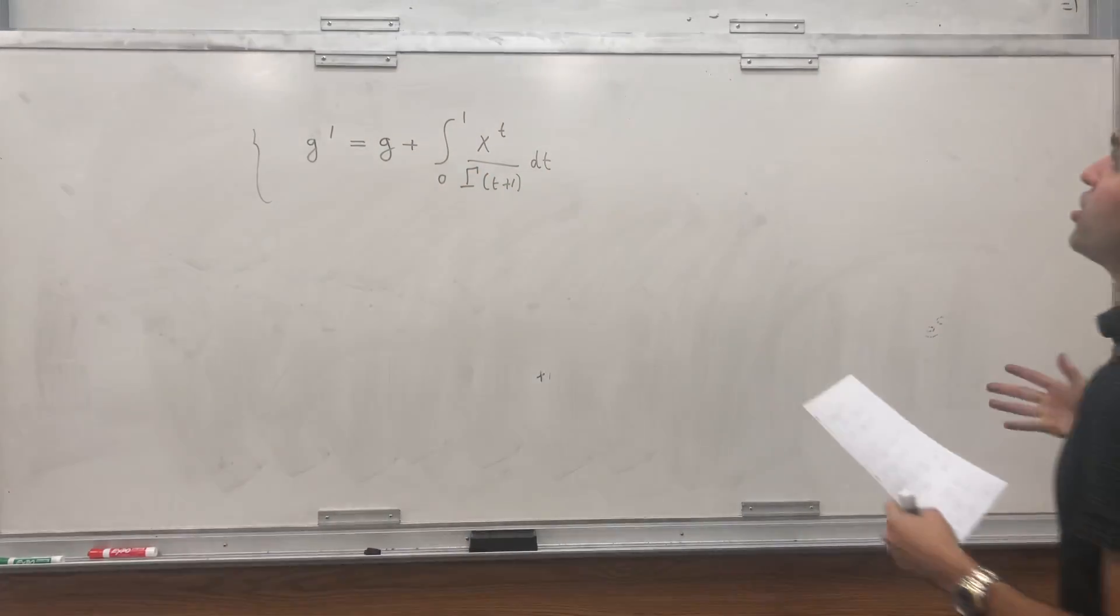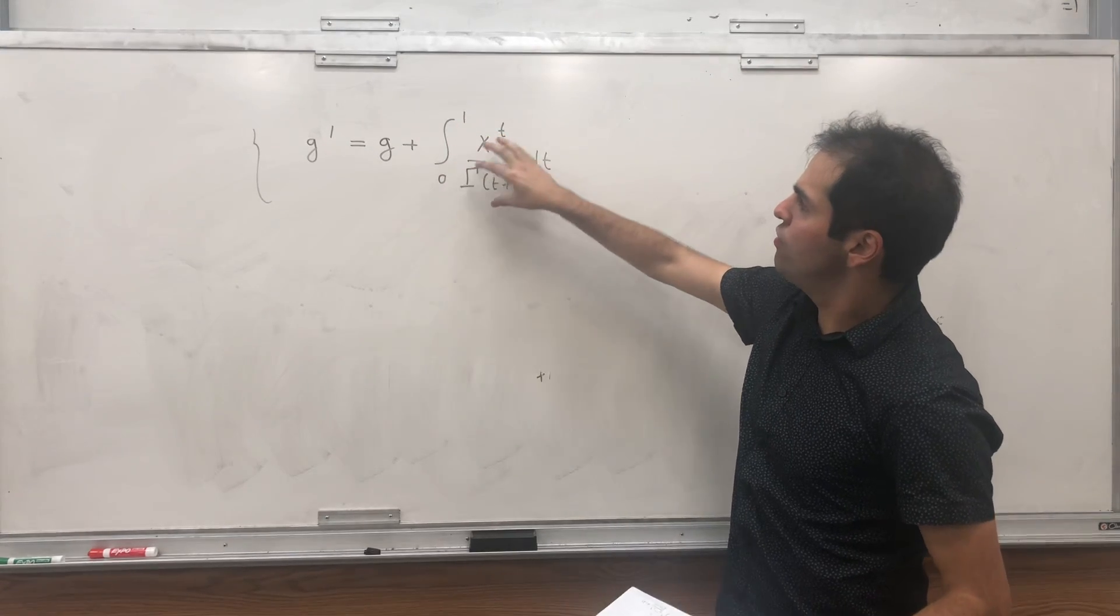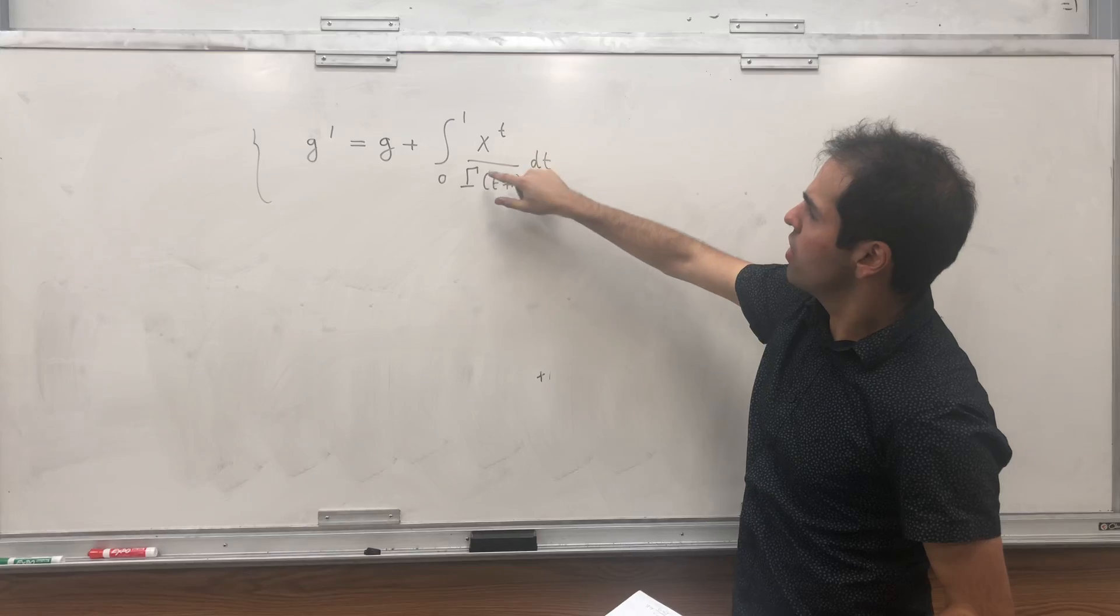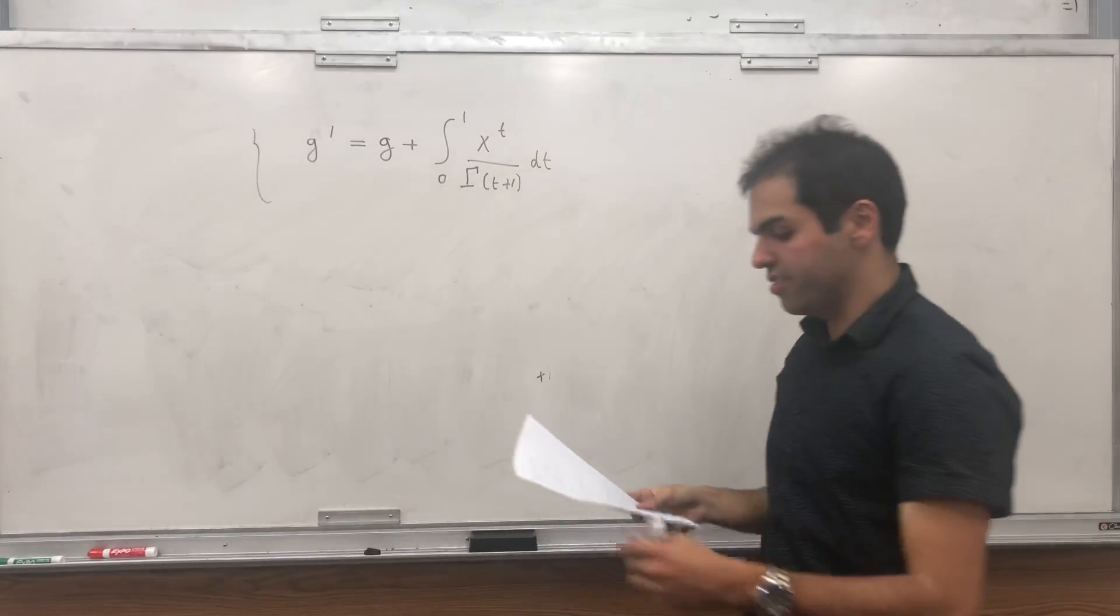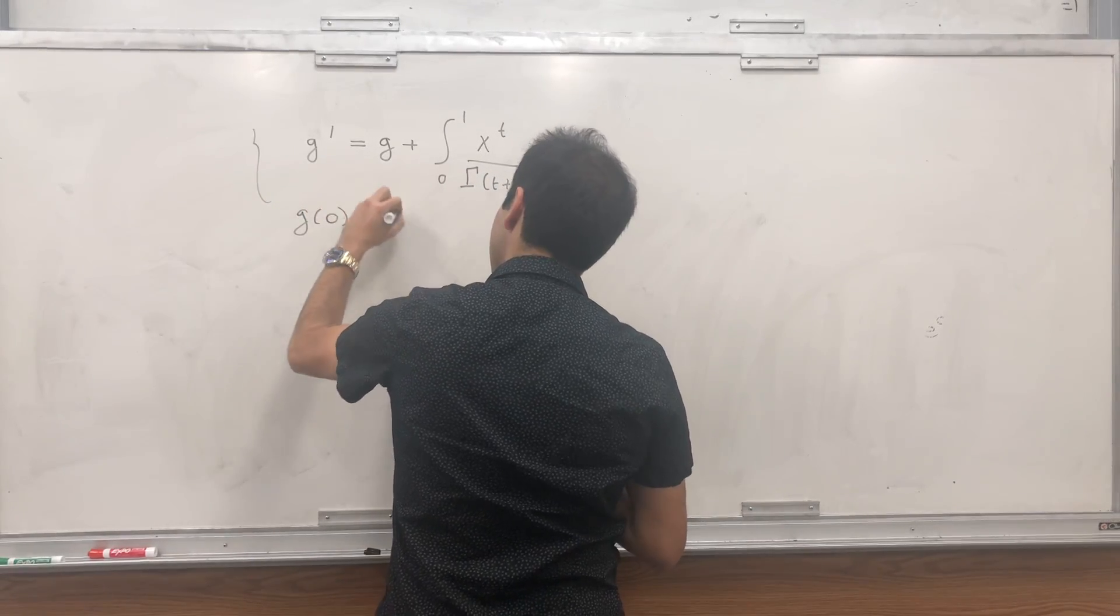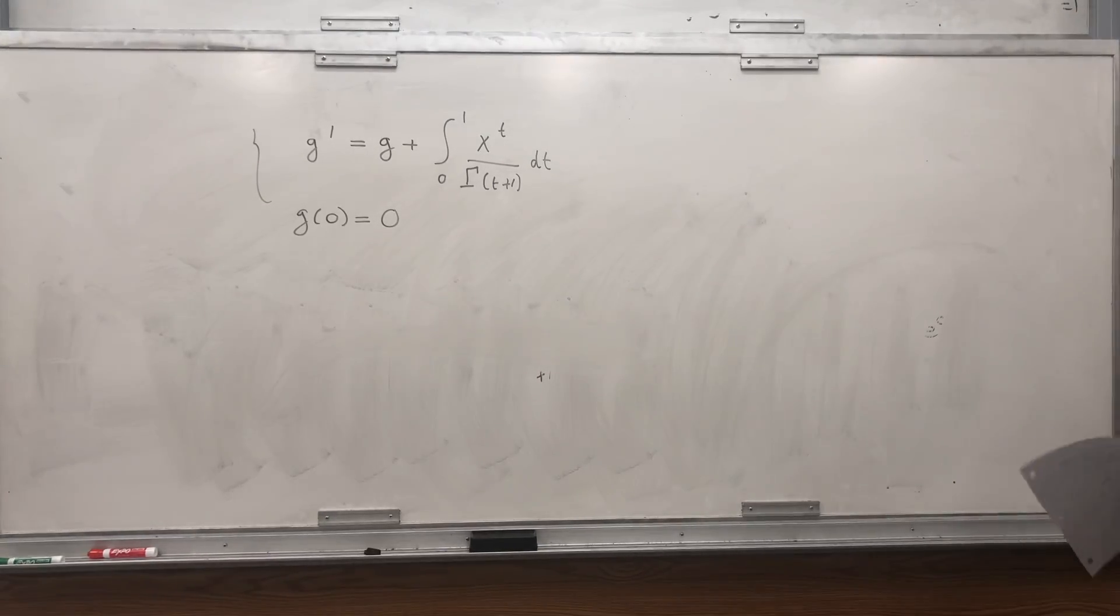Okay. So what we get is g prime is then g plus this junk term integral from 0 to 1, x to the t over gamma of t plus 1 dt. And then what is g of 0? Remember, it's just integral from 1 to infinity of this thing. But 0 to the t is always 0. So g of 0 is just 0.